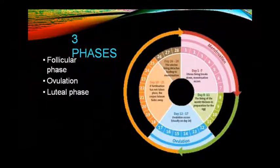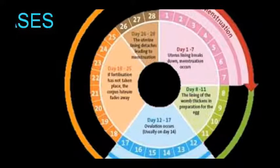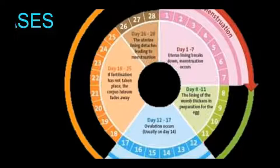Looking at the cycle diagram: the menstrual phase is days 1–7, when the uterine lining breaks down and menstruation begins. Days 8–11, the lining warms and thickens, preparing for the egg. Days 12–17, ovulation occurs — exactly on day 14. Days 18–25 are for fertilization; if fertilization does not occur, the corpus luteum regresses, converting into a yellow body. Days 26–28, the uterine lining detaches and the next menstruation begins.